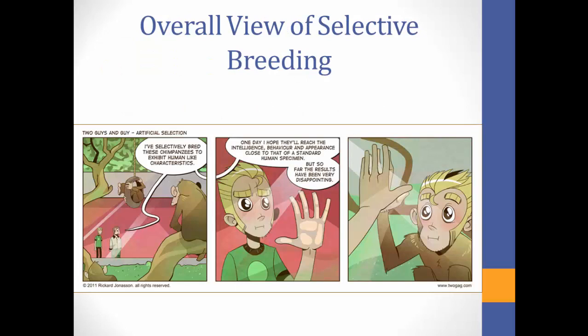Overall, selective breeding is a process of breeding plants or animals to produce desirable traits. These traits are heritable and can be passed from one generation to the next, eventually leading to directional selection. This causes unfavored alleles to become less frequent over time, while favored alleles become more frequent. The breeding of closely related plants or animals eventually leads to inbreeding depression, which is the reduction of an individual's fitness due to inbreeding.